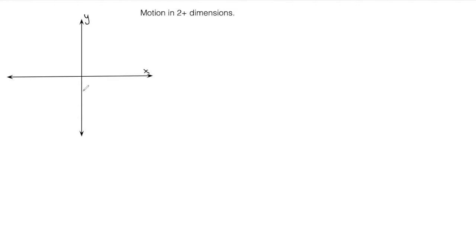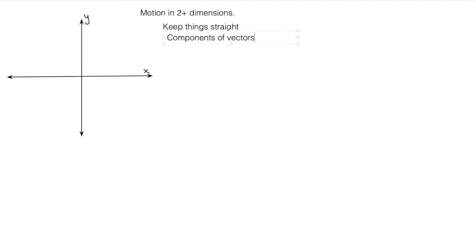There's not a whole lot to say about this subject, but there are a couple of important points. A lot of this subject is really just about keeping things straight. The things we're talking about are our components of vectors. The big thing you have to realize is that the X and Y components of a vector are independent of each other.